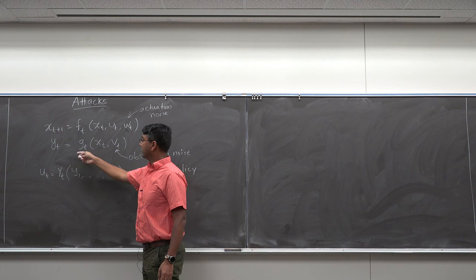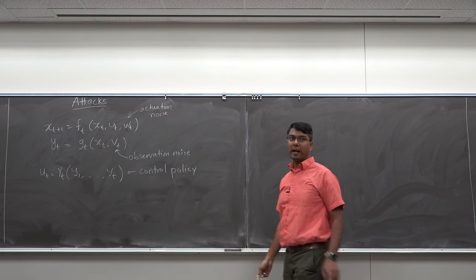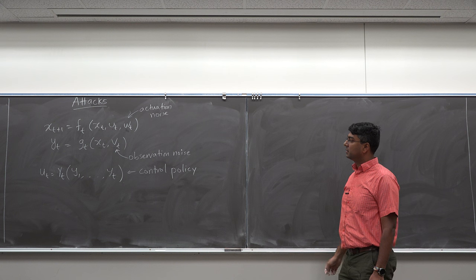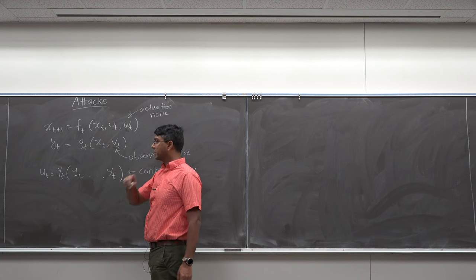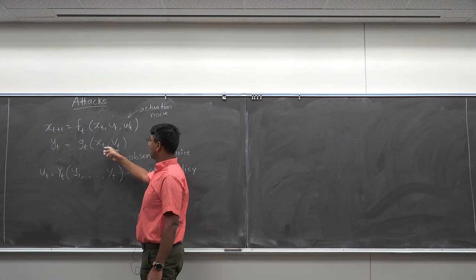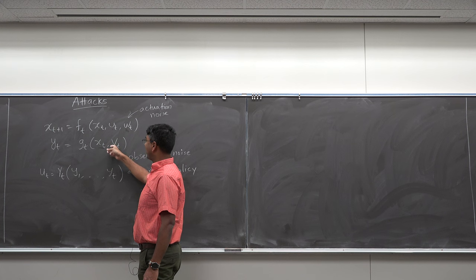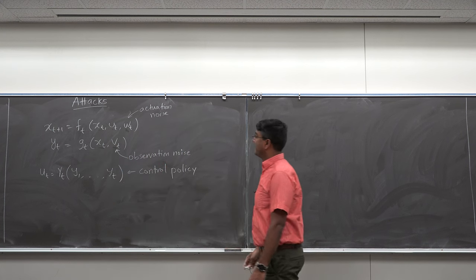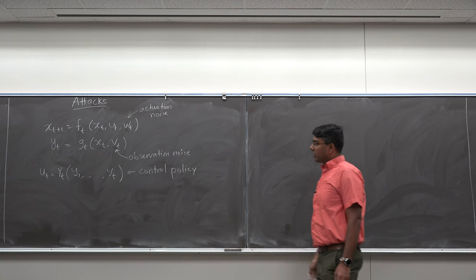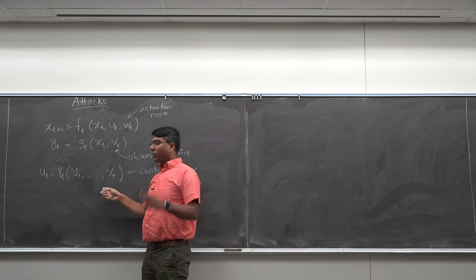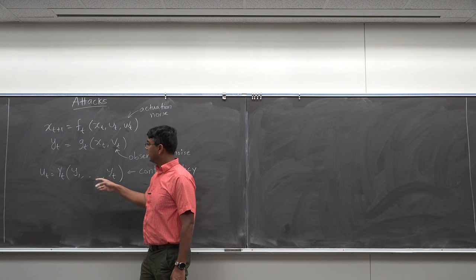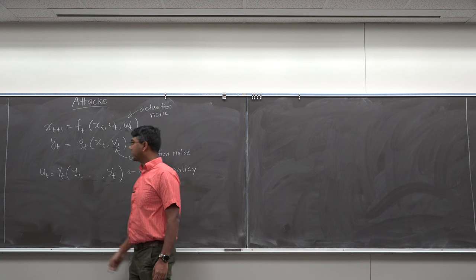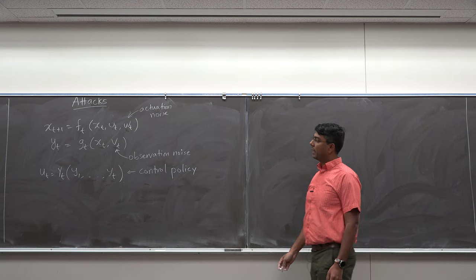The observation is the temperature plus some observation noise. For this particular room, we have a thermostat in the back of the room that is measuring the room's temperature. There is some noise, but in the case of this thermostat the noise is actually very small — the magnitude of vt is very small compared to xt. What the thermostat is observing is a sequence of temperatures, and then it applies policy gamma t to determine what the air handling unit should be doing at this point in time.